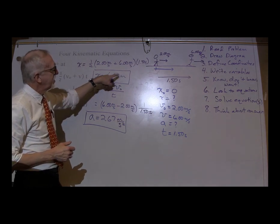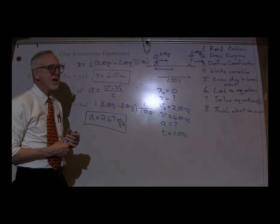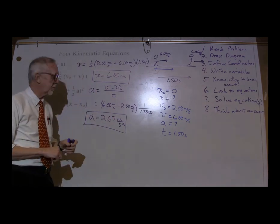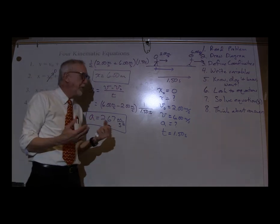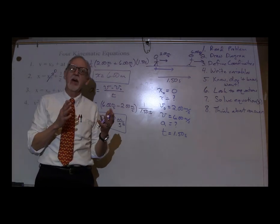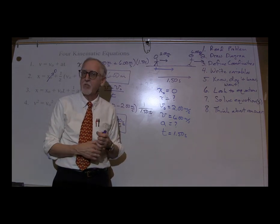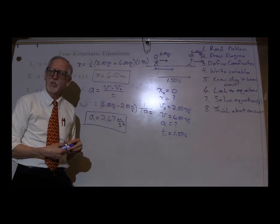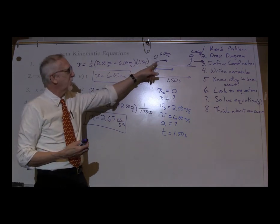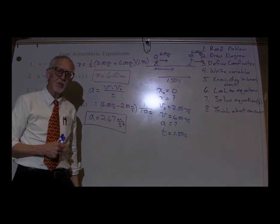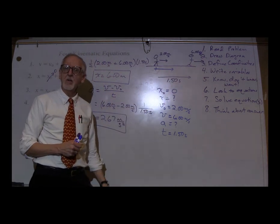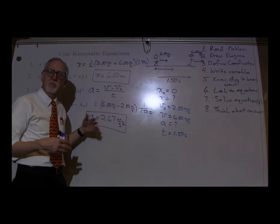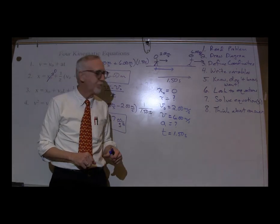Think about the answers. Six meters — she goes six meters in 1.5 seconds as she's speeding up; that seems pretty reasonable. 2.67 meters per second squared — not a very large number; sounds like a reasonable acceleration as she speeds up. You don't have to redo the calculation, just ask yourself: is the acceleration 0.0267? That's too small. Is it 267 meters per second squared? That's way too large. So 2.67 seems like a reasonable value. Very good.